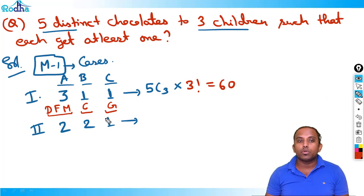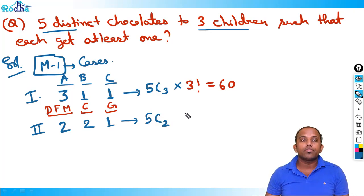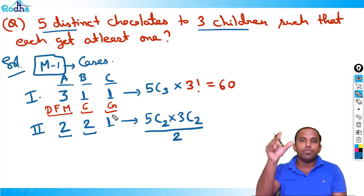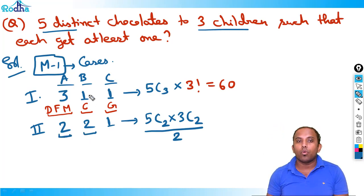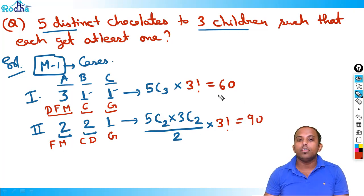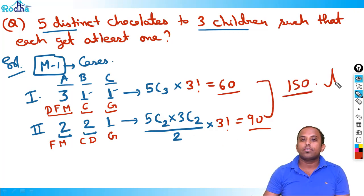For case 2,2,1: select two chocolates in 5C2 ways, then two more from remaining three in 3C2 ways, divide by 2 since the two groups of size 2 are identical in count. Then distribute three groups to three children in 3! ways. That gives (10 × 3)/2 × 6 = 15 × 6 = 90. Total answer by Method 1: 60 + 90 = 150.